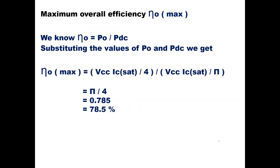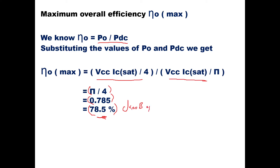The maximum overall efficiency η_max = P0 / PDC. Substituting the values: η = (VCC × IC_sat / 4) / (VCC × IC_sat / π) = π/4 = 0.785, which is 78.5%. This is the efficiency for Class B operation.